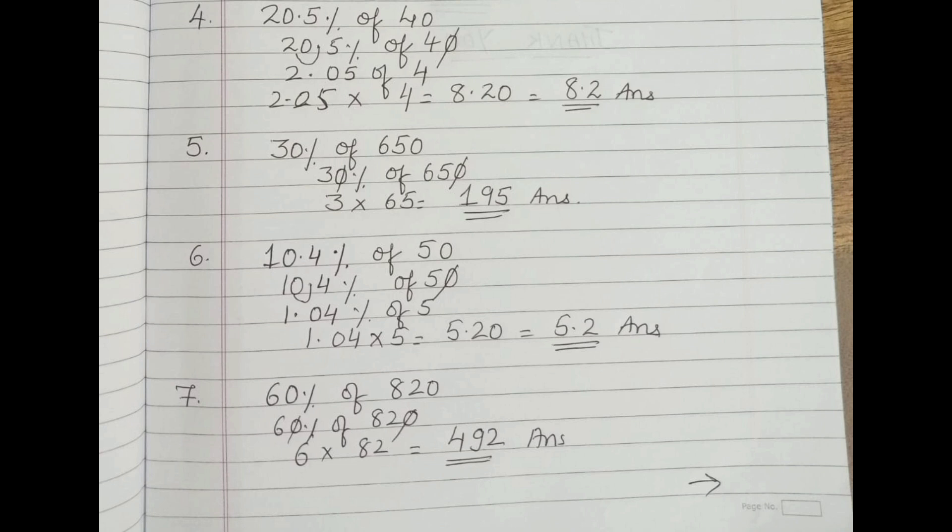It becomes 2.05. Shift the decimal towards the left side, so the new form becomes 2.05 of 4. Now 'of' means multiply, so 2.05 into 4 equals 8.20. The last zero has no value, so the answer is 8.2.